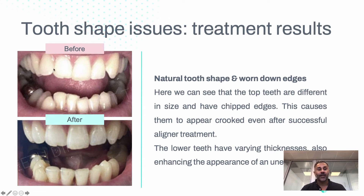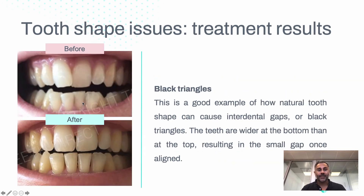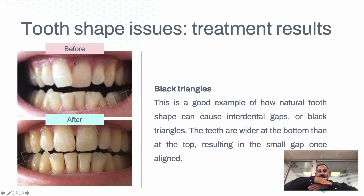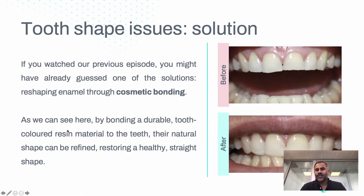Other situations involve naturally worn-down tooth edges. Here we've got some chipping, and we can see some teeth have been more worn than others — again, very simple solutions to contour or bond. The other case we talked about is black triangles: when you've got triangular-shaped teeth that are touching, you naturally have a little space between the teeth, and that's normal.